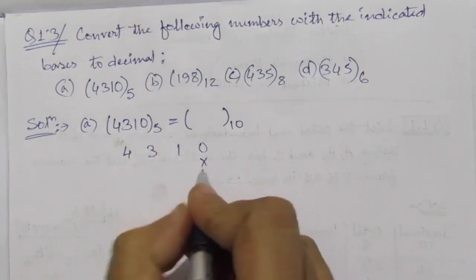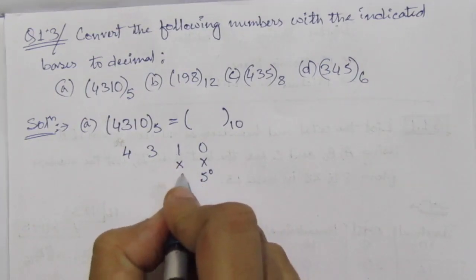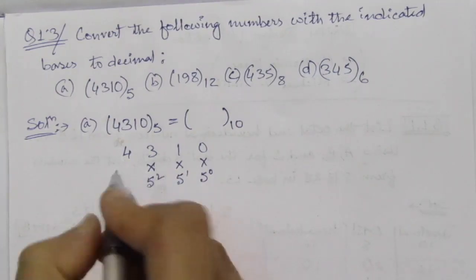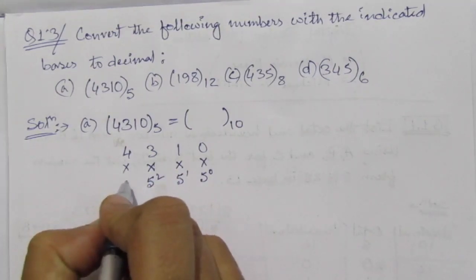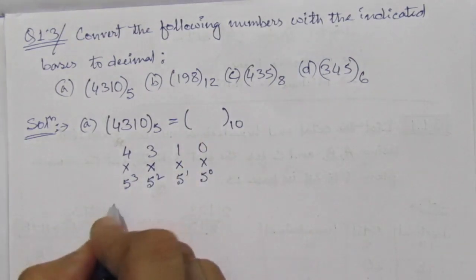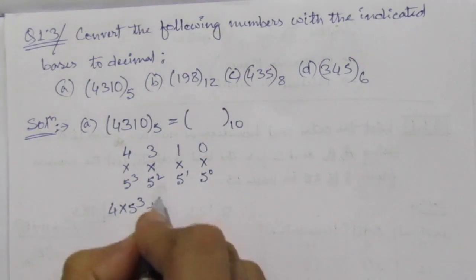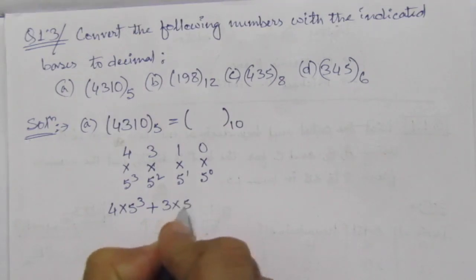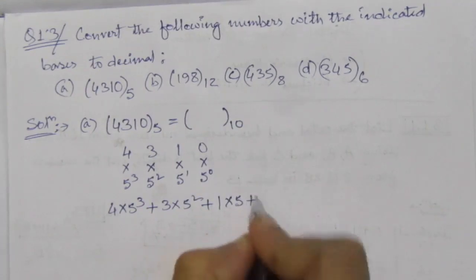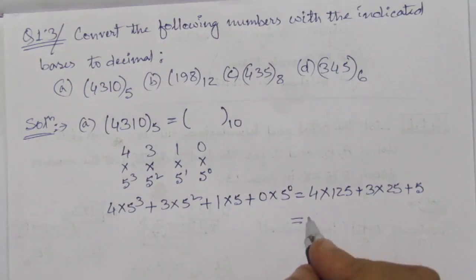Multiply this with 5 to the power 0, the second digit multiply with 5 to the power 1, multiply with 5 square, fourth one with 5 cube. So the decimal number will be 4 into 5 cube plus 3 into 5 square plus 1 into 5 plus 0 into 5, which equals (580) base 10.